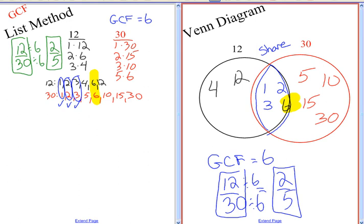Now I could have reduced 12 thirtieths by any of the common factors, I could have did 12 divided by 2, the numerator, and 30 divided by 2, but then I get 6 fifteenths, which is equivalent to 12 thirtieths, but it's not in lowest terms. I'd have to reduce it again.